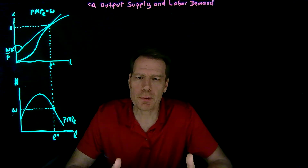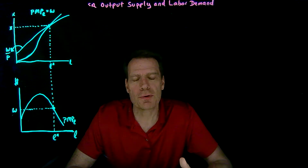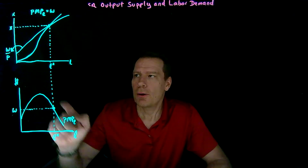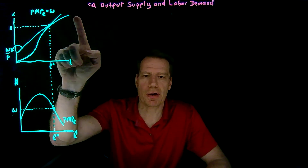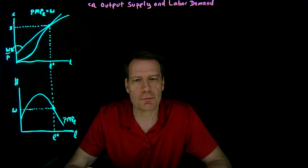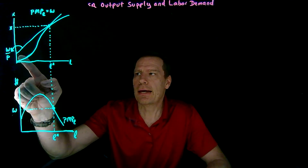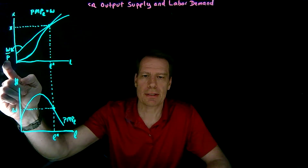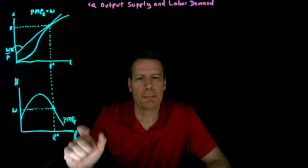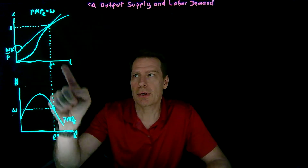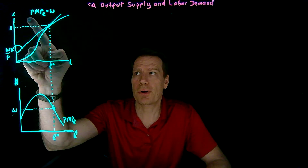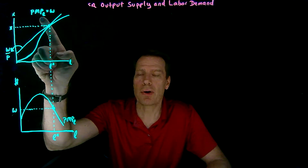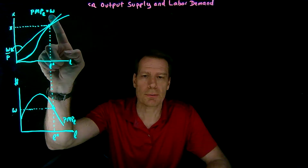We've now developed two equivalent ways of illustrating the firm's short-run profit-maximizing decision. We started with a short-run production function that has a slope of marginal product of labor and found a tangency with the profit line that has a slope of wage divided by price. By setting those two slopes equal to each other at the tangency, we derived a profit-maximizing condition that the marginal revenue product of labor has to be equal to the wage.